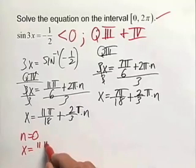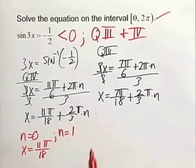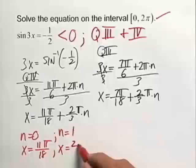we have x is equal to 11 pi over 18. When n is equal to 1, adding those together, we end up with another solution of x is equal to 23 pi over 18.